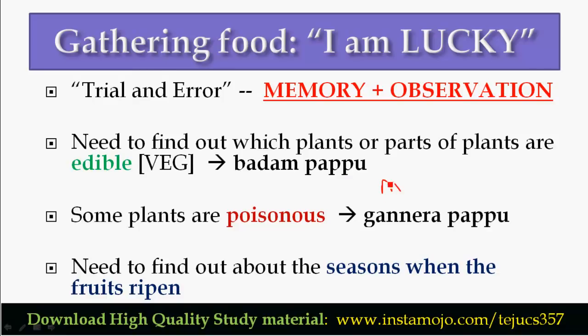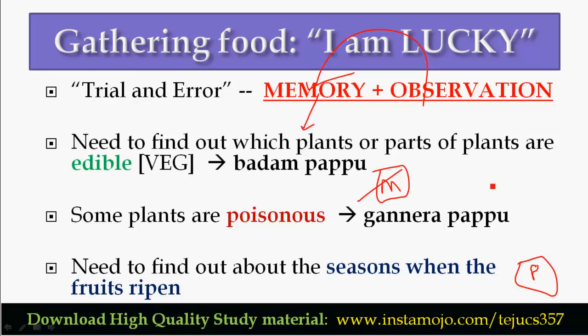For example, mangoes ripen in summer season, while other fruits ripen in winter season. These seasonal changes mean fruits are ripe only in a period of time. This knowledge of which plants are poisonous and which parts are edible was passed on to the next generation.